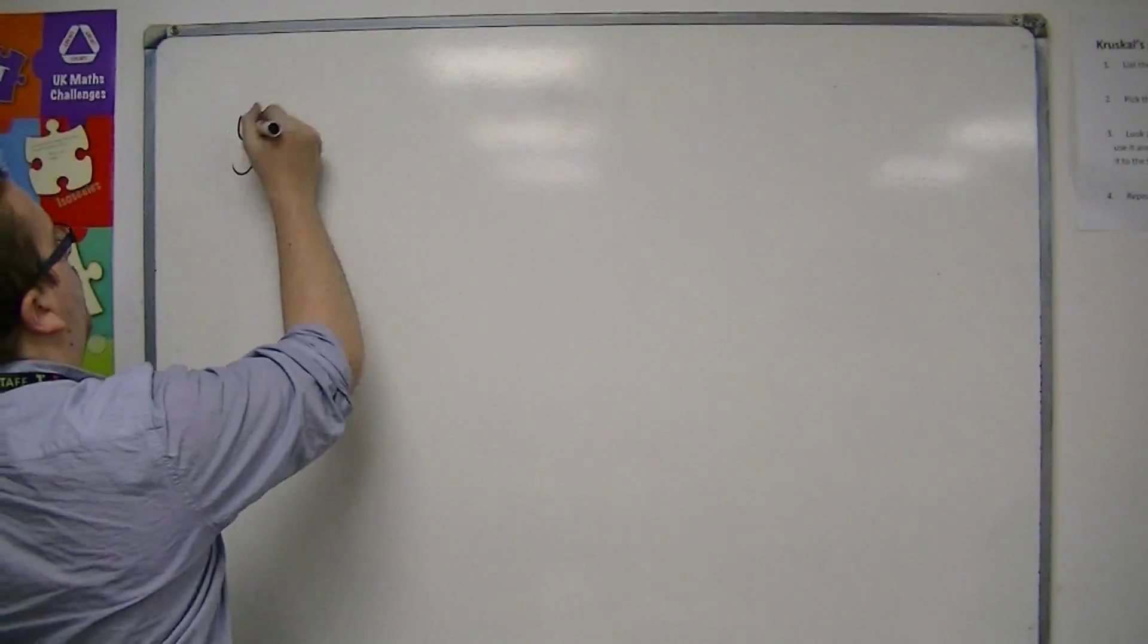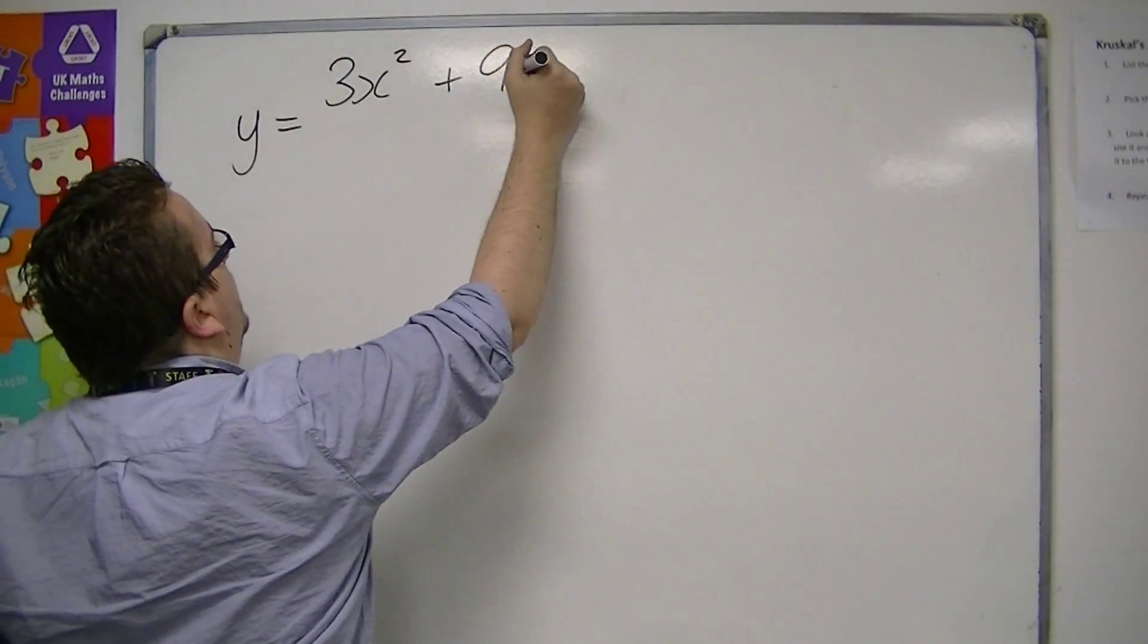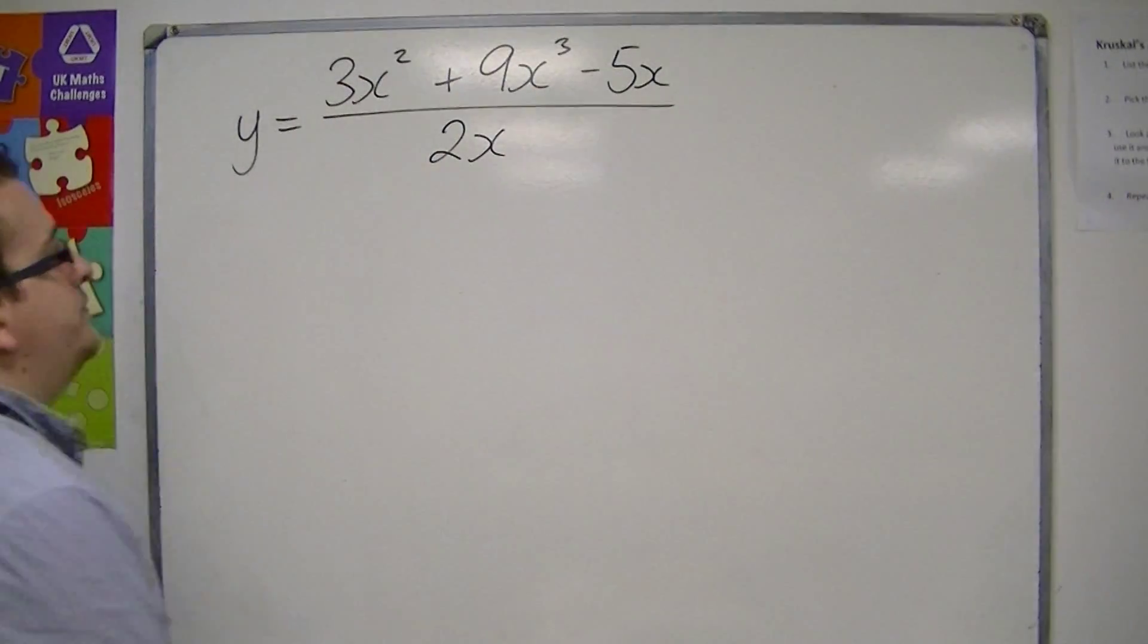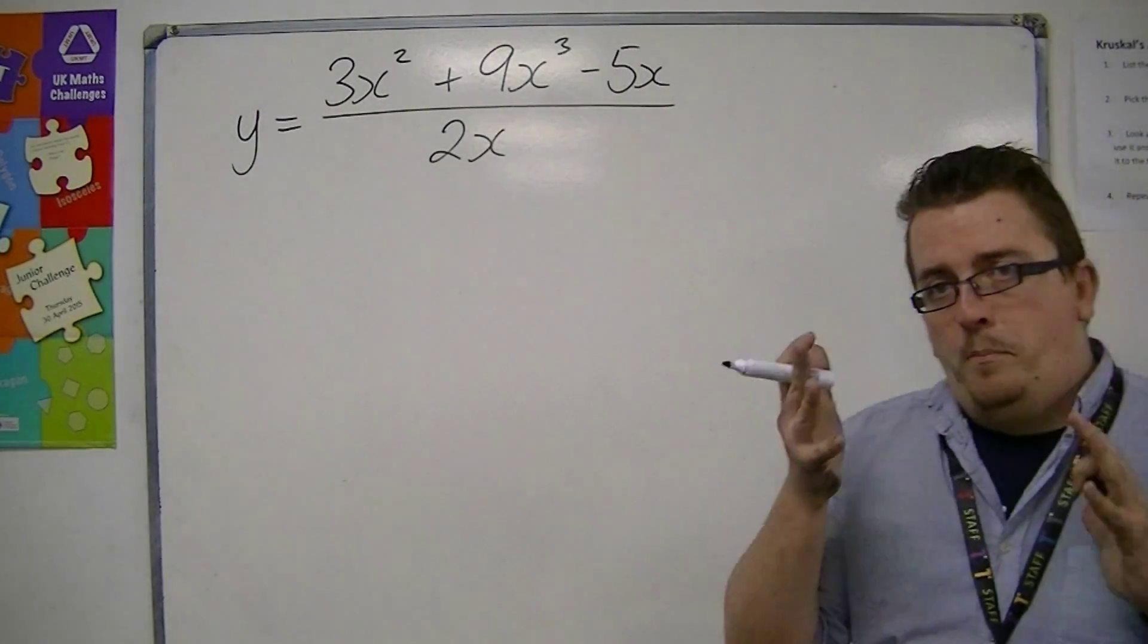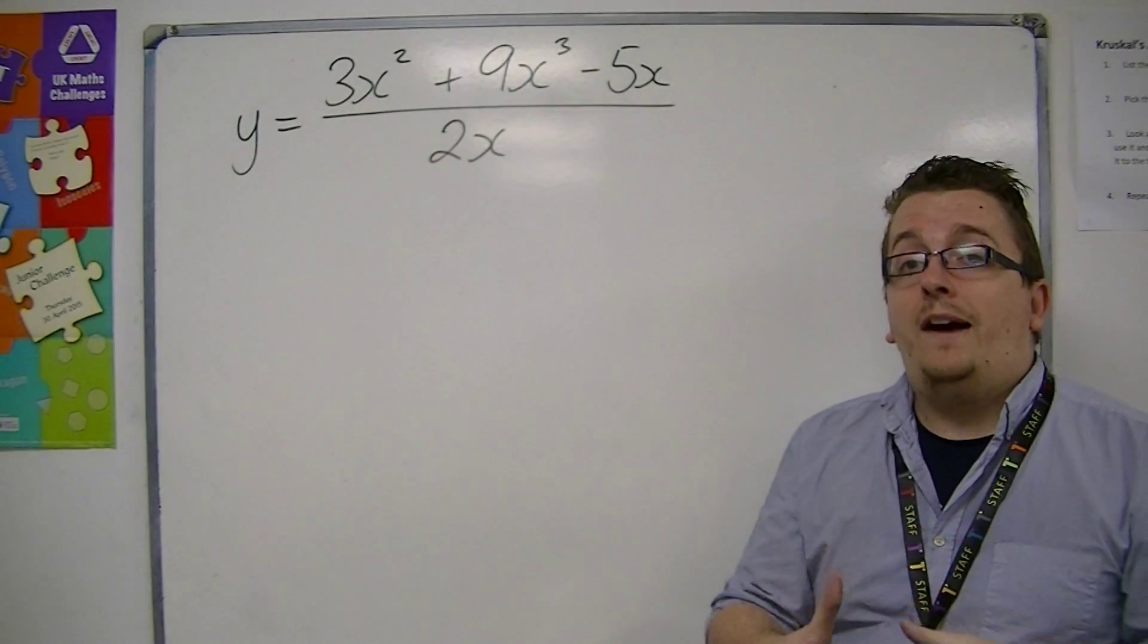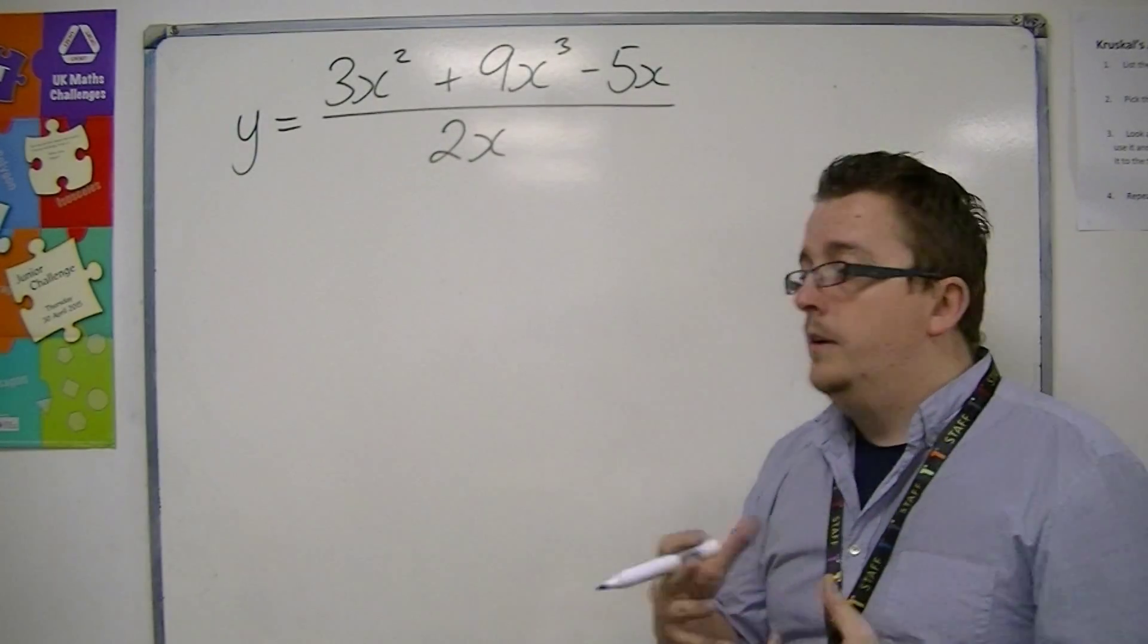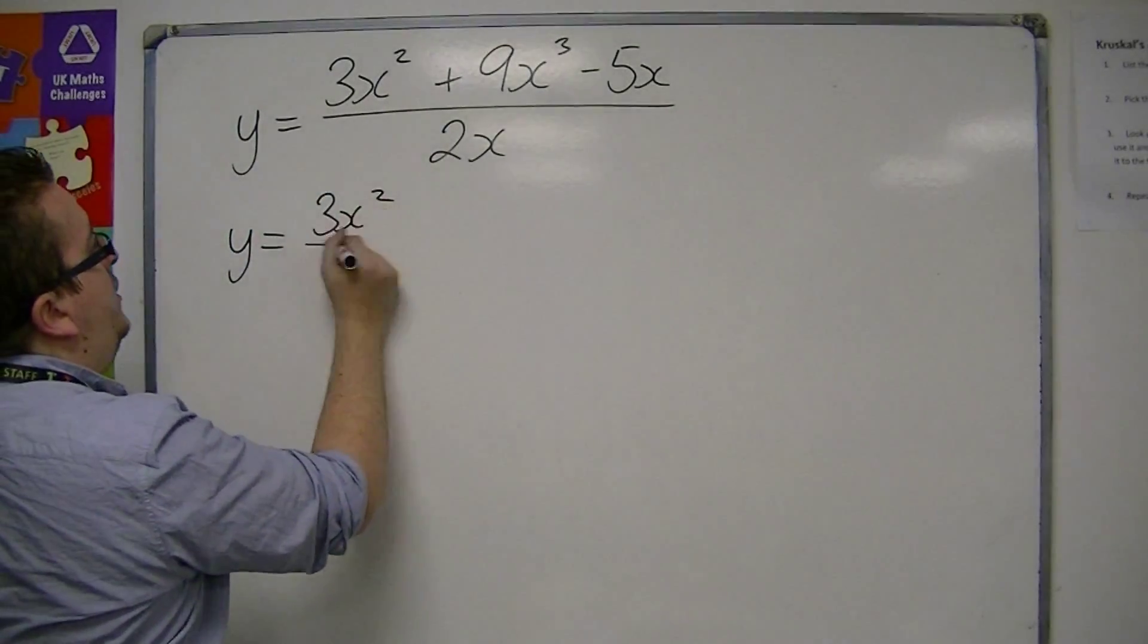Let's say we've got something like y is equal to 3x squared plus 9x cubed minus 5x all over 2x. So this looks absolutely horrific. But break the problem down into stages. We do not have, currently, a way of differentiating this with this fraction of x.